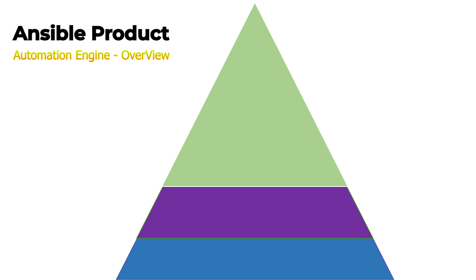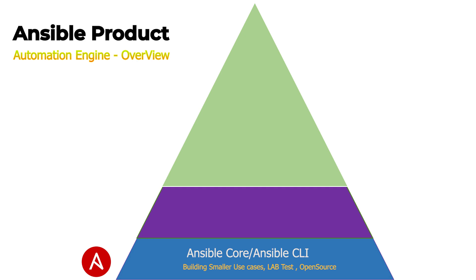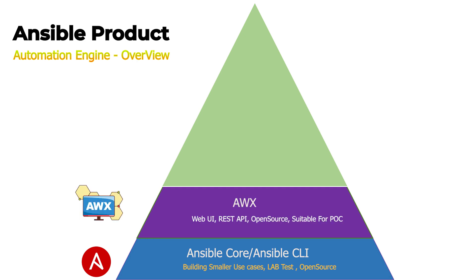In this introductory video, let's explore where AWX fits in within the Red Hat product ecosystem. To start, we have Ansible Core, an open source tool offering a command line interface for network automation. If you are a fan of scripting and command line, this is the tool for you. Then comes Ansible AWX, which is an upstream open source project for Ansible Tower. It brings a web-based graphical interface to manage Ansible playbooks and inventories, making it an excellent choice for proof of concept scenarios with complex automation requirements.